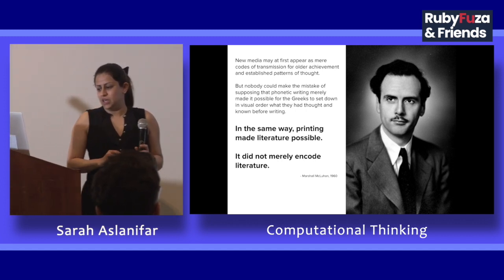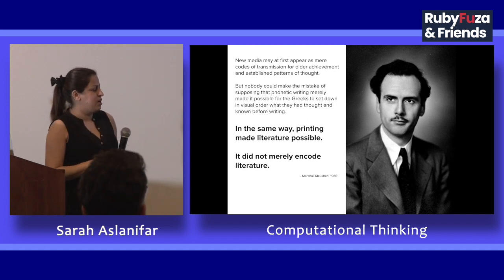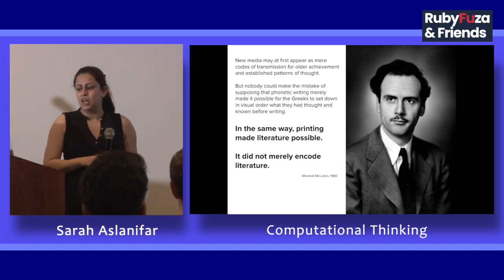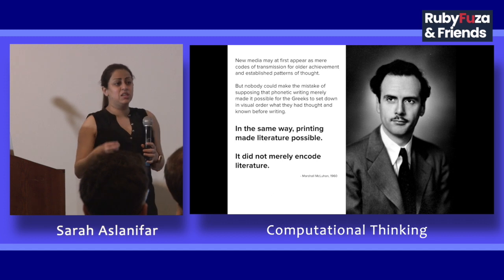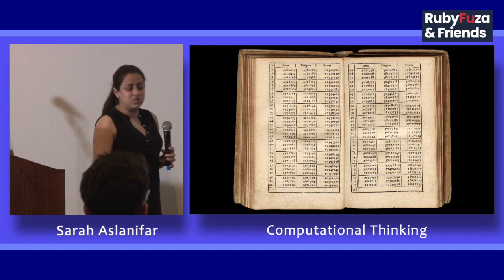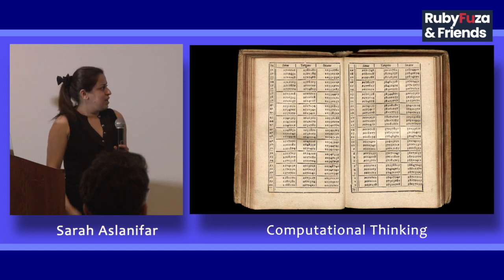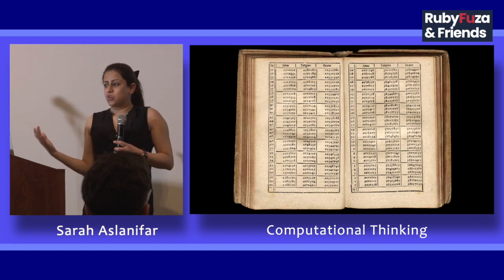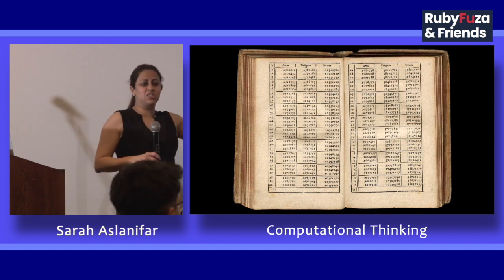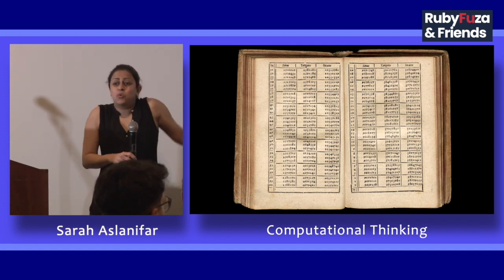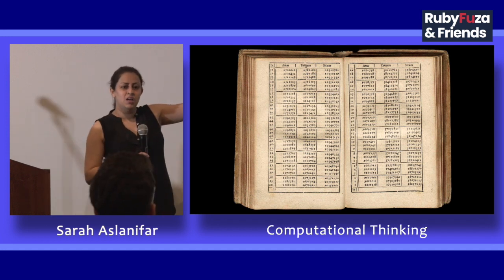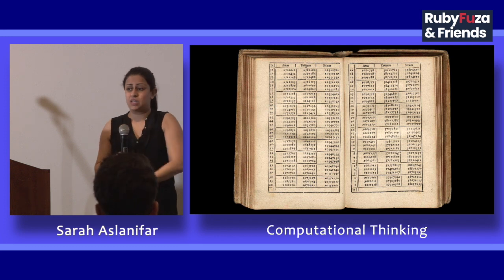Marshall McLuhan, a philosopher, talks about the effect of media on our culture and life. In the same way that printing made literature possible — and by literature I don't mean just books like Shakespeare, I mean books like this trigonometric function book written in 1619. In craft literacy, a book like this was unheard of. Scribes were extremely error-prone. This was the data that we were now able to capture and use to make our lives better. In our world of software we call this a cache — you look at the information you need and it immediately gives you some answers so you don't have to think too hard.